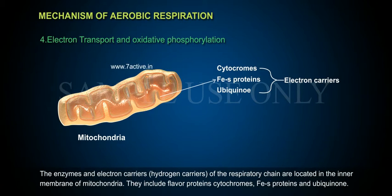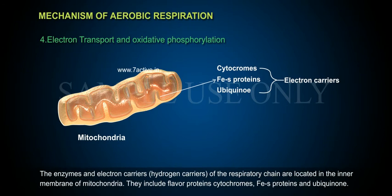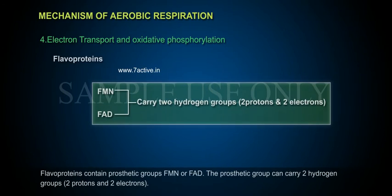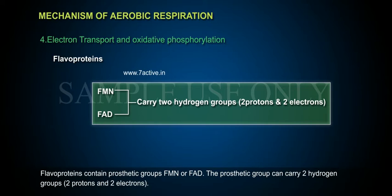The components of the respiratory chain include flavoproteins, cytochromes, Fe-S proteins, and ubiquinone. Flavoproteins contain prosthetic groups that can carry 2 hydrogen groups — 2 protons and 2 electrons.